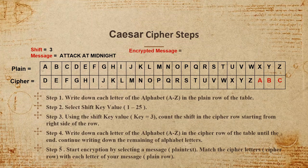Now I'll start encryption. The message is 'attack at midnight.' I'm going to match each letter of the message in the plain row with its corresponding letter in the cipher row. Starting with 'attack' — A is in the plain row, and it corresponds to D in the cipher row. So the first encrypted letter is D.